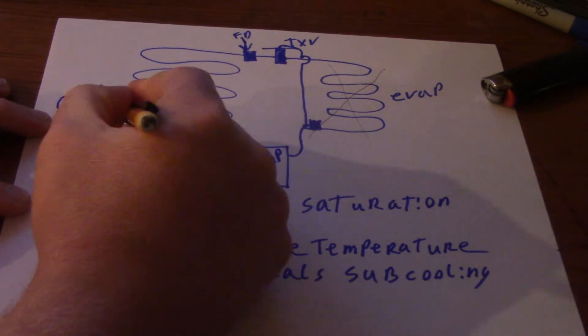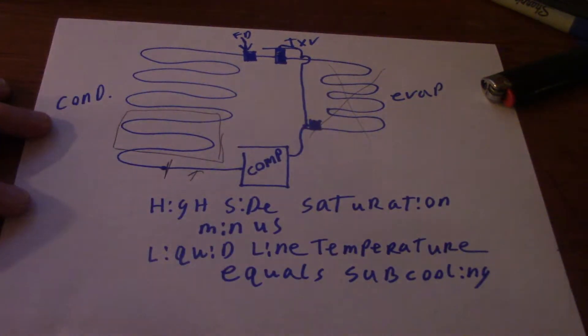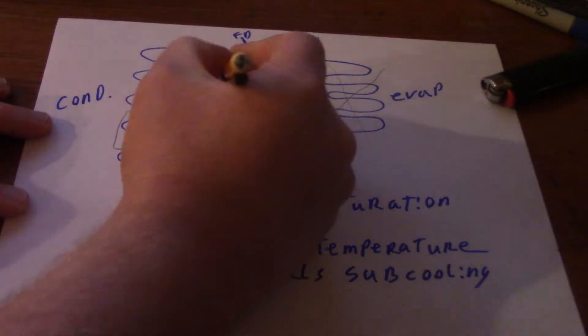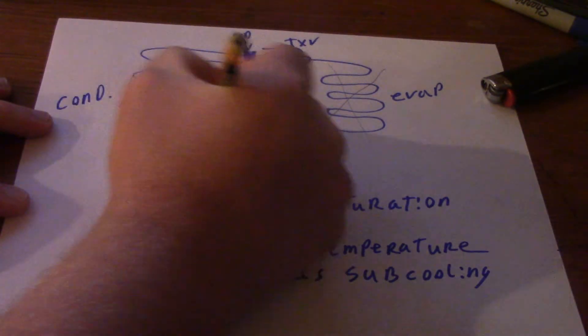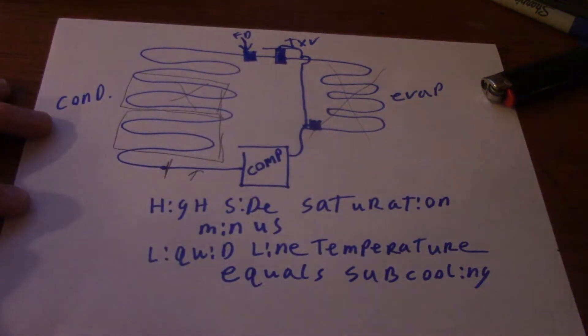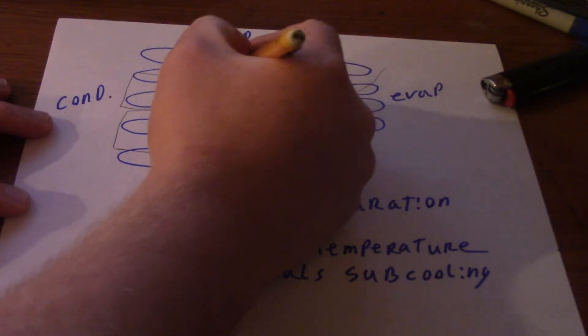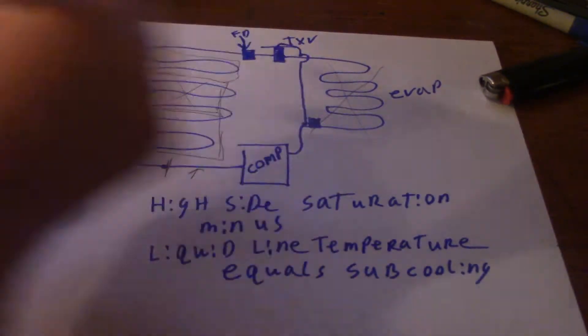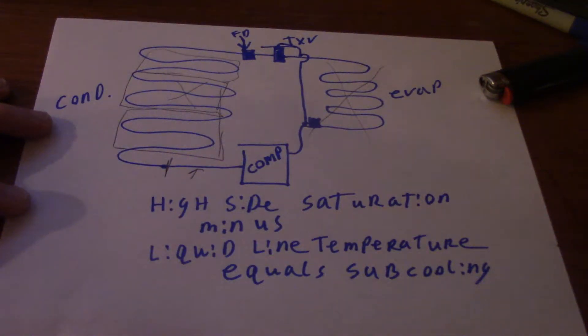Your condenser, right in this area is going to do something we call de-superheating. In this area of the condenser right here is where it's condensing going through a change of state. This last little bit right here for the condenser, that's your subcooling circuit where we're giving additional cooling to the refrigerant.